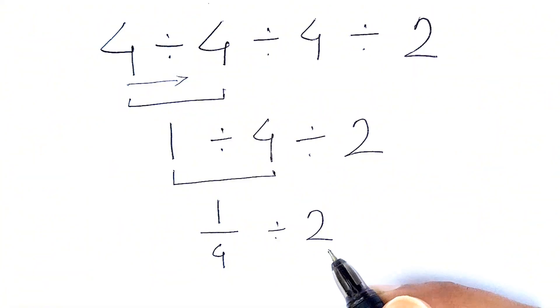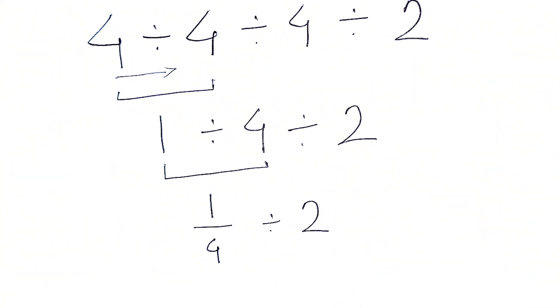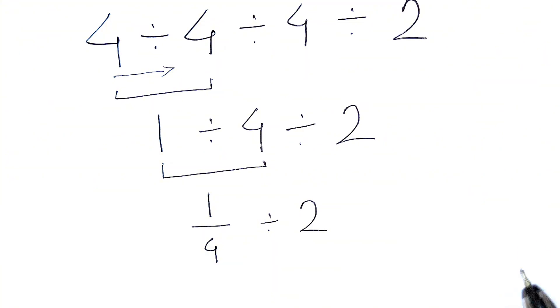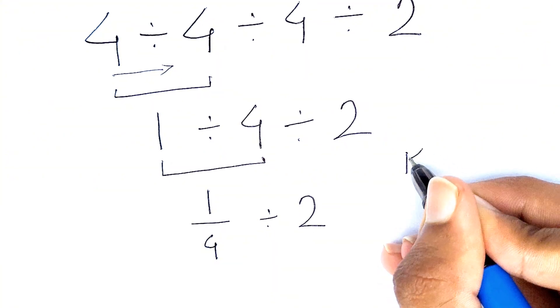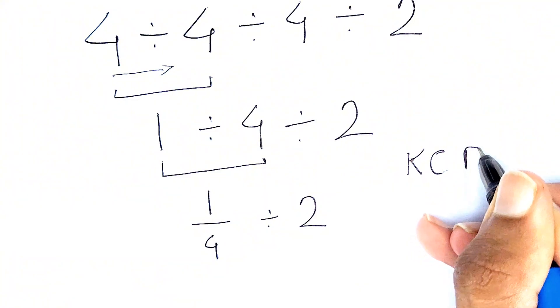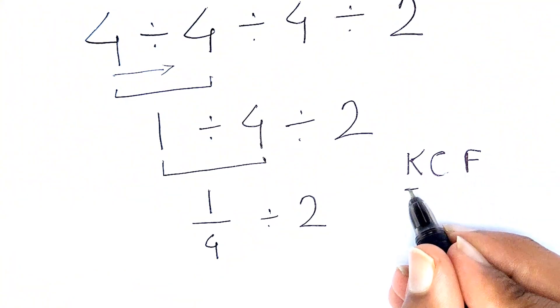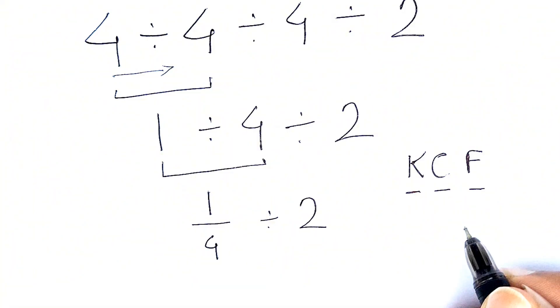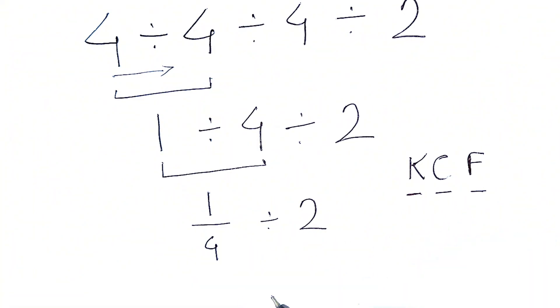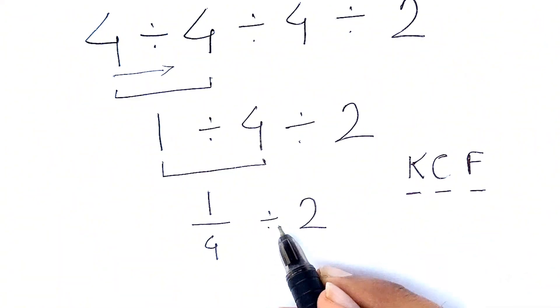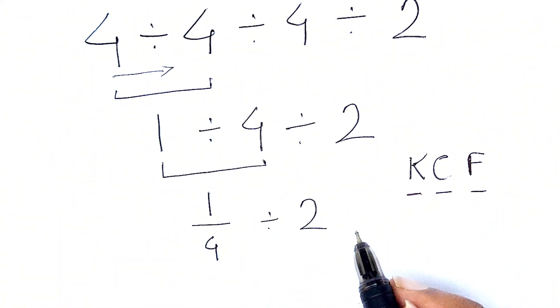So now here we are dividing the fractions, and for dividing fractions we need to use one rule that is also called the KCF rule. KCF stands for Keep, Change, and Flip. It means we need to keep this 1 over 4 as it is, we need to change the division into multiplication, and we need to flip this 2.